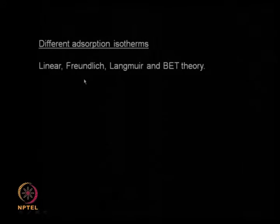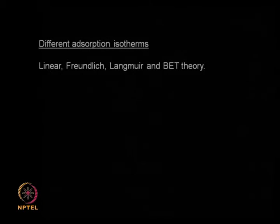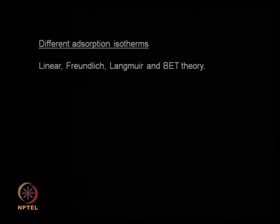There are different types of adsorption isotherms — linear adsorption isotherm, Freundlich, Langmuir, the BET theory, and so on. These adsorption isotherms are used in calculating the amount of adsorbent required in the entire adsorption process. For designing an adsorption process, the type of equilibrium relation between the adsorbent and adsorbate is necessary — you need to determine the relationship in your lab so that data can be used for large-scale design.